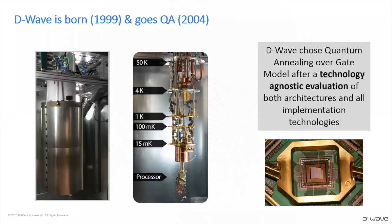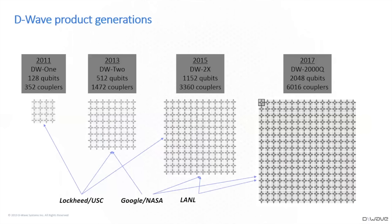The gap between our decision to build a superconducting quantum annealer and when we actually first delivered one to our first customer was a seven-year period of very active development and engineering. In 2011, our first-generation system, the D-Wave 1, was introduced. That first-generation system was purchased by Lockheed, housed at the University of Southern California, and was a 128-qubit system.